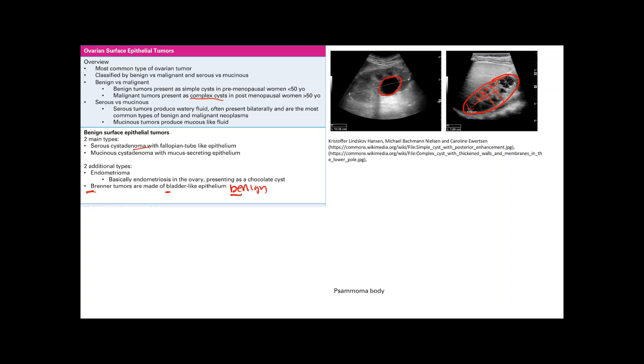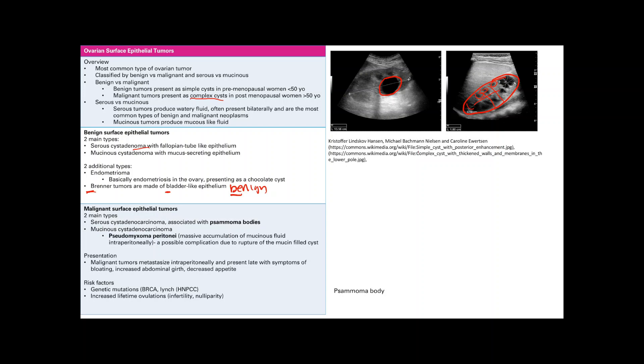The three B's of the Brenner tumor. Now we can go to the malignant surface epithelial tumors, and again very similar to the benign ones except now we have a serous cystadenocarcinoma, which basically tells you it's malignant.